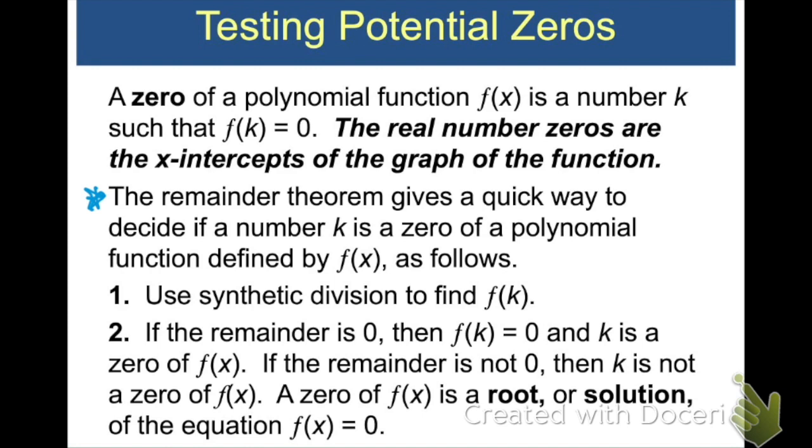So using synthetic division and the remainder theorem, here's what we have. A zero of a polynomial function, f of x, is a number k such that f of k equals zero. Which means if I do synthetic division and I test to see if k is a zero or not, I'm going to get zero for my remainder if it is one of my solutions, if it is a zero. So the remainder theorem gives us a quick way to decide if a number k is a zero or not. And here's what we're going to do. Number one, we're going to use synthetic division to find f of k. And number two, if the remainder is zero, then we know that k is a zero. It's a solution. If the remainder is not zero, then we know k is not a zero, and we can move on and test a different number to see if it is a solution.